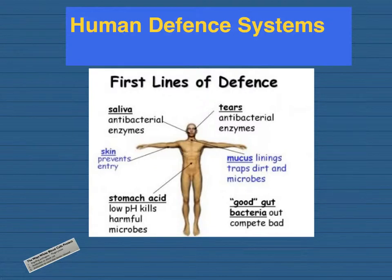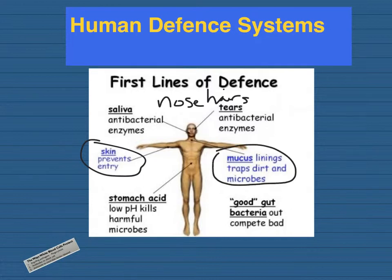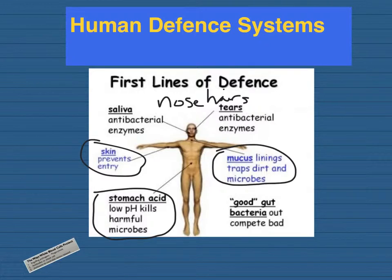You'll need to know how your body's defence systems protect you from disease. The first thing — particularly for foundation — are the non-specific defence systems. This includes the skin, which prevents entry as a barrier; nose hairs, which physically stop particles getting into your body; your trachea and bronchi, which have mucus linings that can trap dirt and microbes; and your stomach, which contains stomach acid with a low pH, so it's acidic and kills harmful bacteria. Other defences include saliva and good gut bacteria, but those are the four main ones.